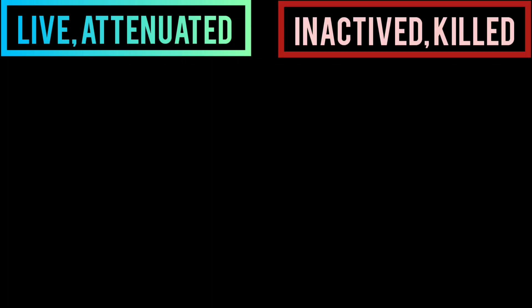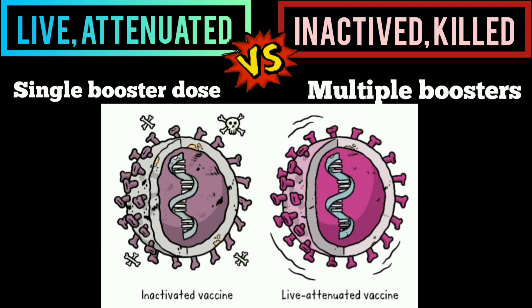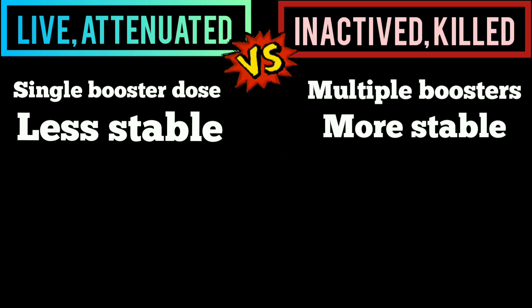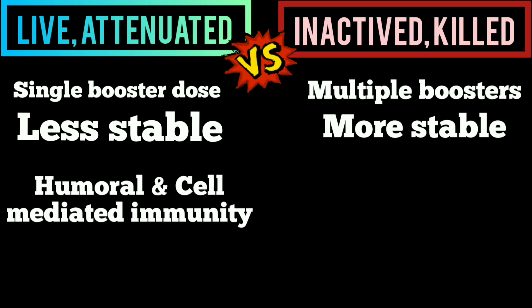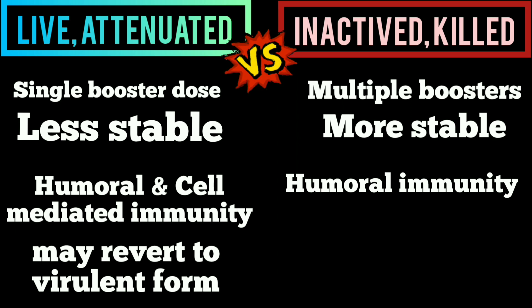We can draw a clear comparison between attenuated and inactivated vaccines. Attenuated vaccines generally require a single booster dose, while inactivated vaccines require multiple boosters. Attenuated vaccines are less stable, while inactivated vaccines are more stable. Attenuated vaccines induce both humoral and cell-mediated immunity, while inactivated vaccines focus only on humoral immunity. A problem with attenuated vaccines is that they may revert to a virulent form, while inactivated vaccines cannot revert to a virulent form.